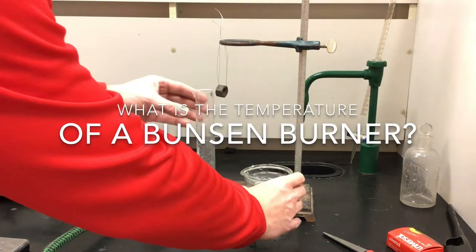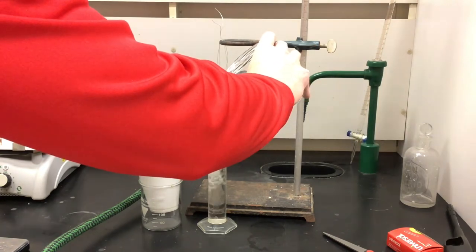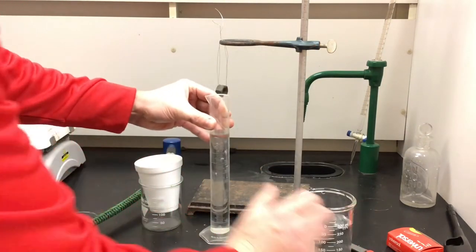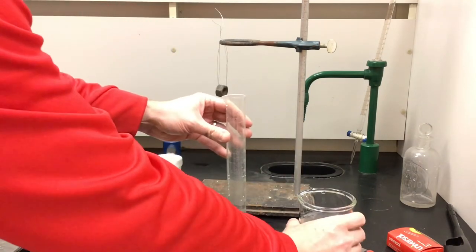Hello Palatine Chemistry. Today we're going to try to find the temperature of a Bunsen burner flame. We're going to start by getting 200 milliliters of water using a graduated cylinder. We have our styrofoam cup nested in a beaker for stability.